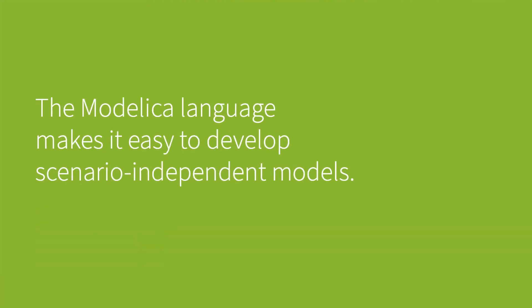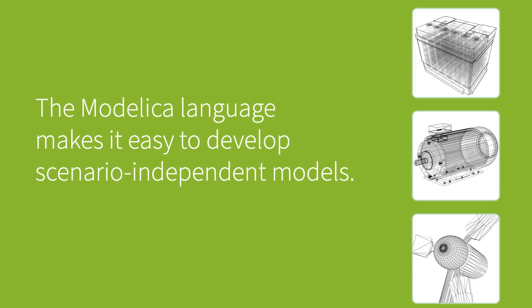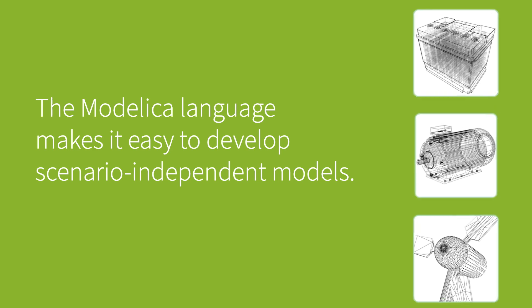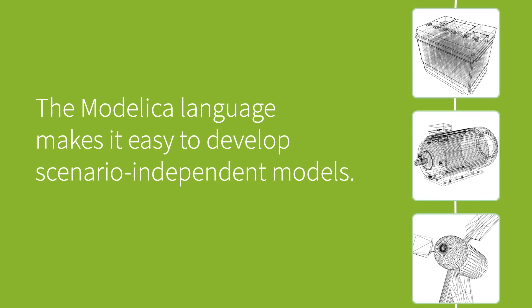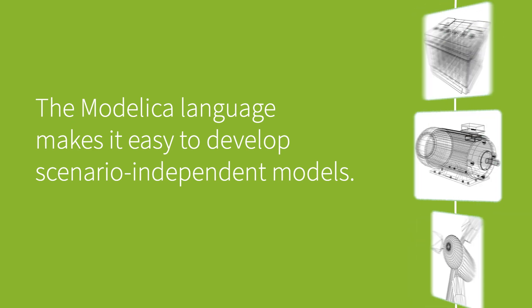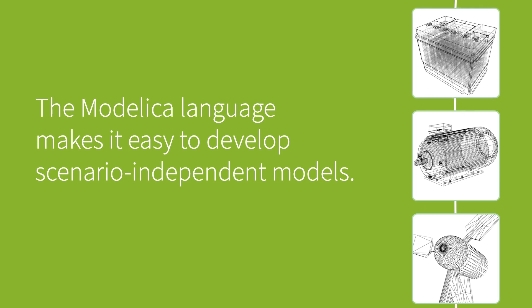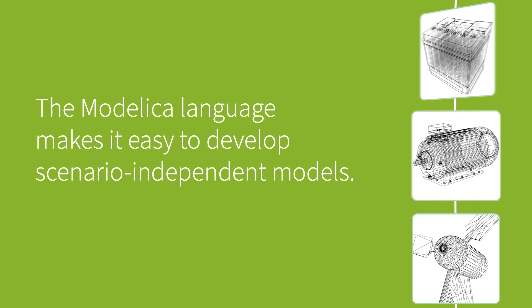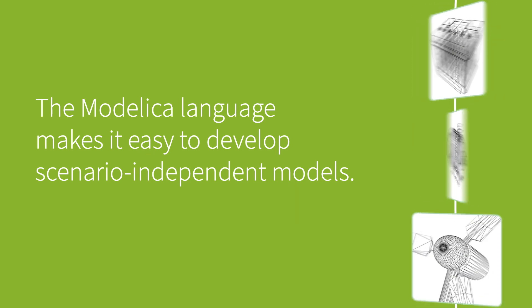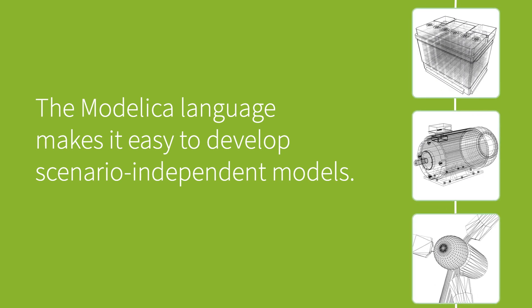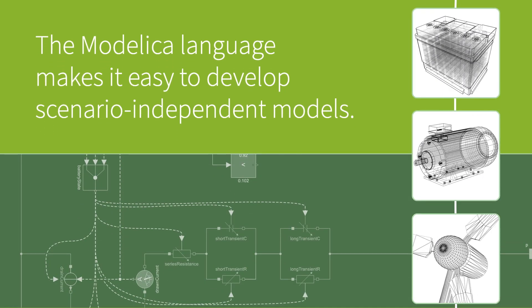In the real world, things like a motor can act as both a motor or a generator, depending on how you connect and use it. When decelerating, for example, the motor could be used as a generator, which could charge a battery, and when accelerating, that same battery could be used to power the motor. Therefore, a language that wants to describe this properly needs to support acausal modeling. Modelica is designed from the ground up using this principle, making it easy to develop scenario-independent models.